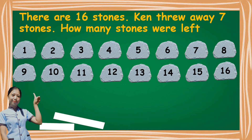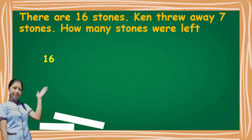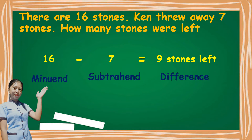So, to know how many stones are left, let us count seven steps backwards from sixteen. Let us now start: one, two, three, four, five, six, seven. So, at what number did we stop? Yes, it is at nine. The number we reach or stop at is the difference. Let us now write in a number sentence: sixteen minus seven is equal to nine. Sixteen is the minuend, seven is the subtrahend, and nine is the difference. So, it means that seven steps backward from sixteen is nine.